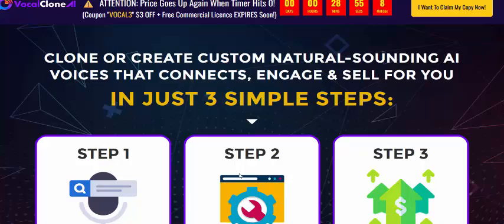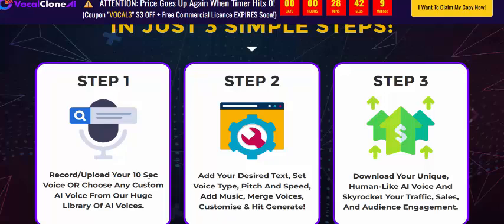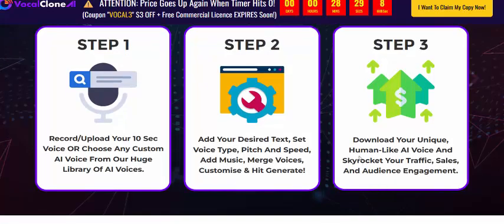Vocal Clone AI works in just three simple steps. Step one: record or upload a 10-second voice, or choose a custom AI voice from the built-in library. Step two: add your desired text, select from six voice types including print, speed, music, and Marvis voice, and customize your generation.